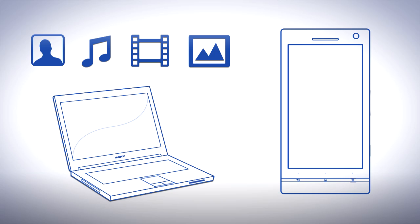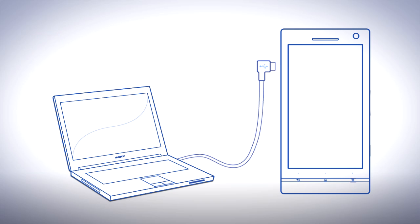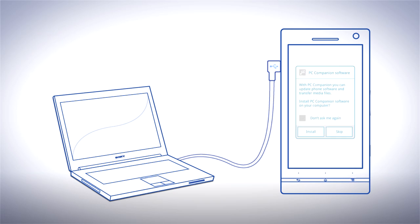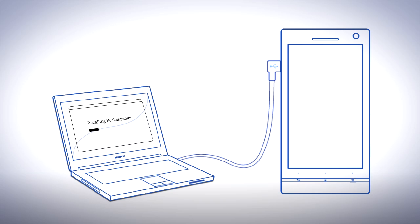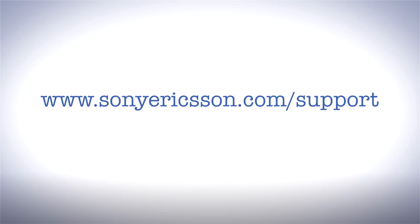If you don't have PC Companion, plug in your phone to a computer using a micro USB cable. Click Install in the pop-up on your phone and follow the instructions. PC Companion can also be downloaded from sonyericsson.com forward slash support.